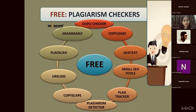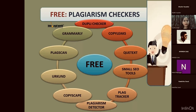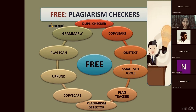First of all, we will discuss the free plagiarism checkers. Most of us — or I would say all of us — cannot purchase those paid plagiarism checkers. Bigger universities can purchase and have access to those, but we just use the free ones. Here are some free checkers: Duplichecker, Copy Leaks, Quetext, Small SEO Tools, PlagTracker, Plagiarism Detector, Copyscape, Urkund, iThenticate, Grammarly. From all of these, I would recommend Grammarly and Urkund as the most reliable free plagiarism checkers.